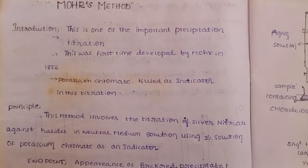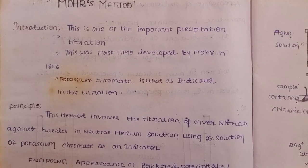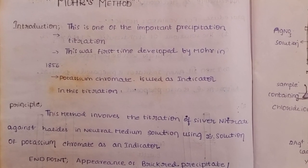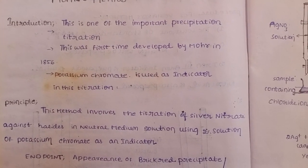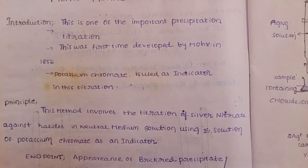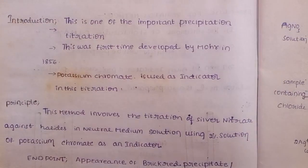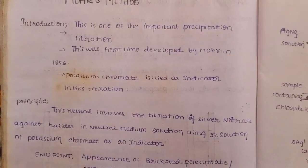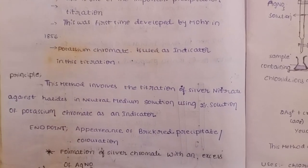In 1856, potassium chromate was used as an indicator in this titration. Generally we use an indicator for endpoint detection, so potassium chromate is used as the indicator. Next, the principle: